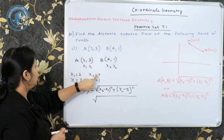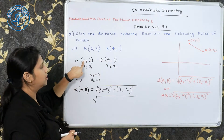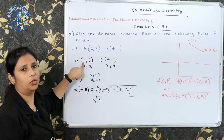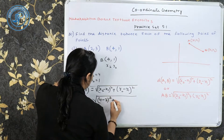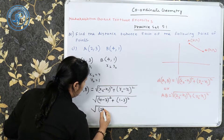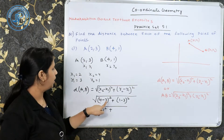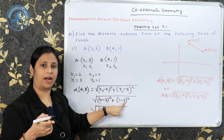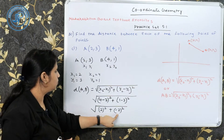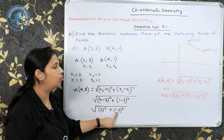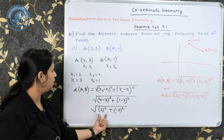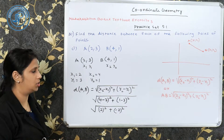देखिए x2 − x1 और y2 − y1 calculate करते हैं। यहाँ पर 4 − 2 = 2, plus का sign आएगा। 1 − 3 = −2, minus sign आएगा — don't forget to put the minus sign here। बाद में minus का square plus होने वाला है, but concepts clarity होनी चाहिए कि कहाँ minus आ रहा है और कहाँ bracket लग रहा है।